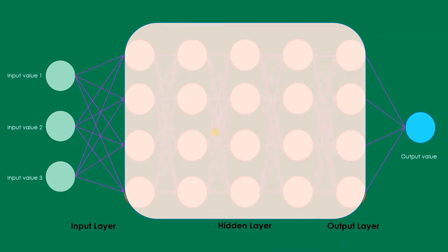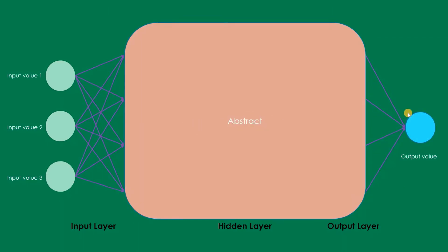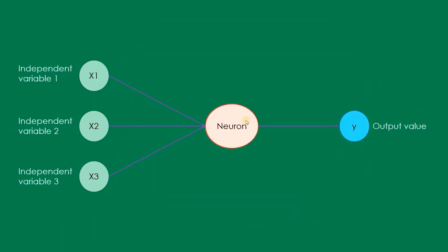This hidden layer is called 'hidden' because it is abstract — we have three inputs and some output, but this whole layer is totally abstract to us; we do not know what is happening inside. The independent variables x1, x2, and xc are the three features — they can be anything like eyes, ears, or whatever depending on the dataset. There can be any number of independent variables provided as input to the neuron in the hidden layer, which contains the activation function.